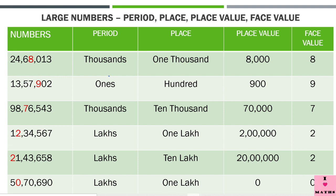Here is another favorite question with examiners: which digit's place value and face value always remain the same? The answer is 0 — it is the digit whose place value as well as face value always remains the same. That's all for today. I hope you will now make no mistakes while writing the period, place, place value, and face value of highlighted digits. Thank you, children — have a great day!